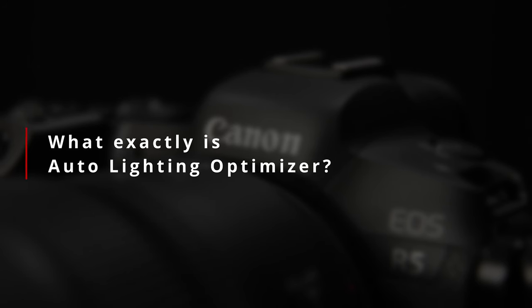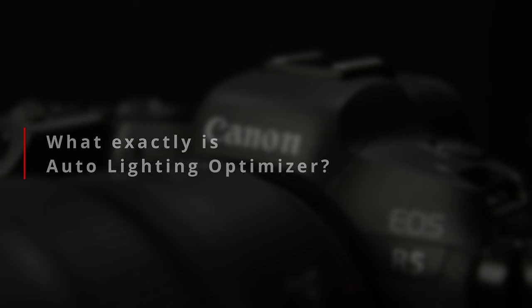So what exactly is Auto Lighting Optimizer and what does it do? According to Canon, Auto Lighting Optimizer automatically adjusts the brightness and contrast of your images to prevent them from being too dark or having too much or too little contrast. With all of these kinds of magic functions, their inner workings are proprietary secret sauce and none of the camera makers, Canon included, provide any detailed insights into what they're going to do and how they're going to work. Obviously that would help the competition too much.